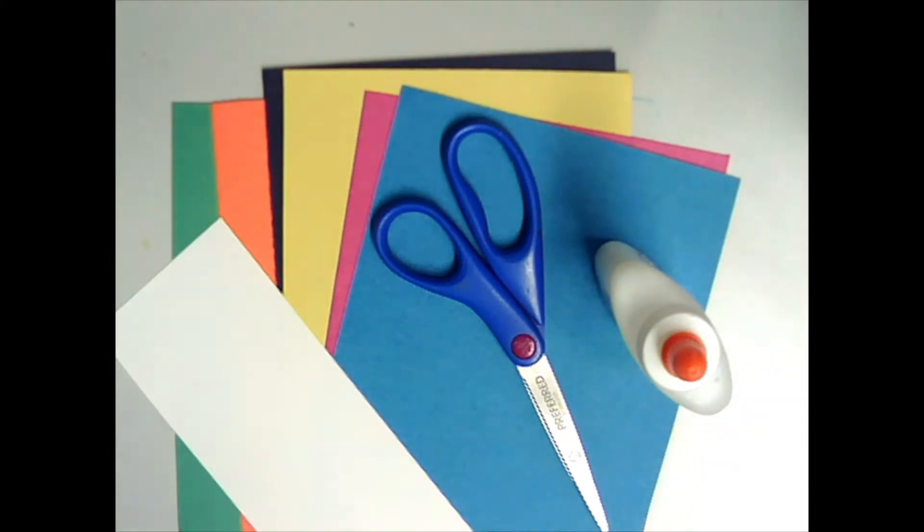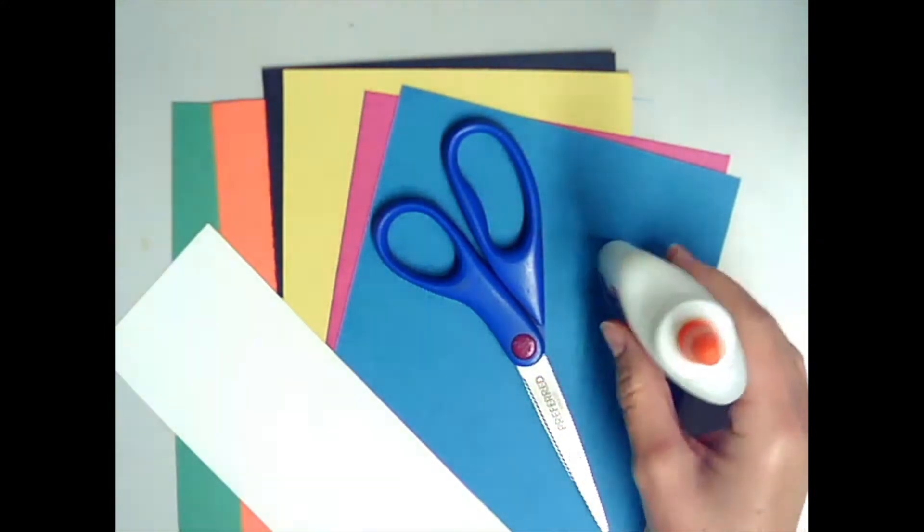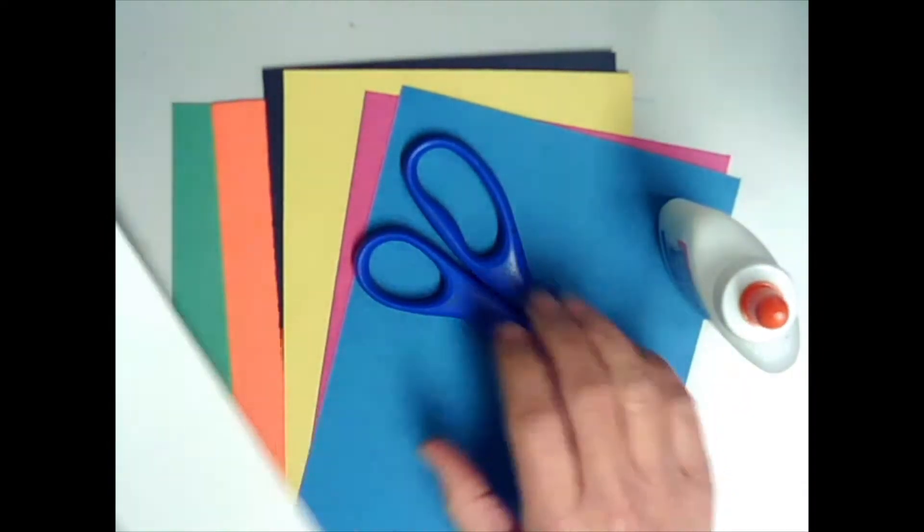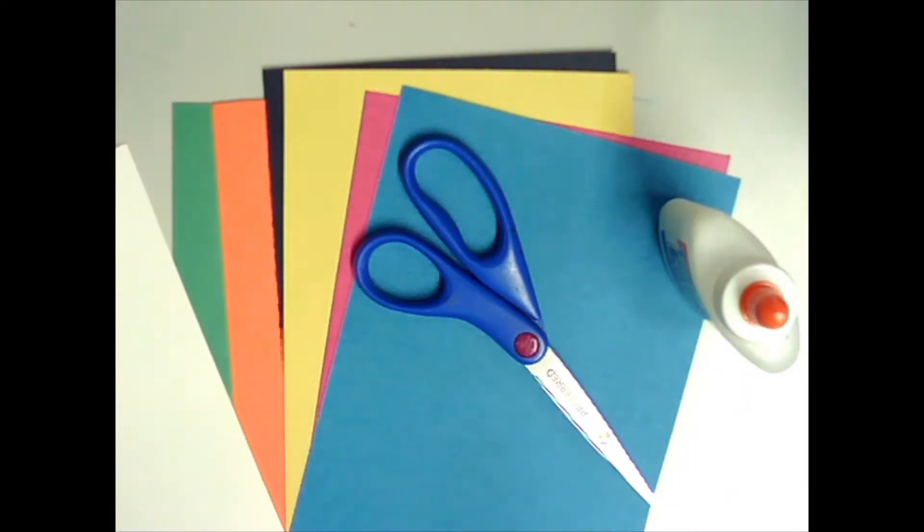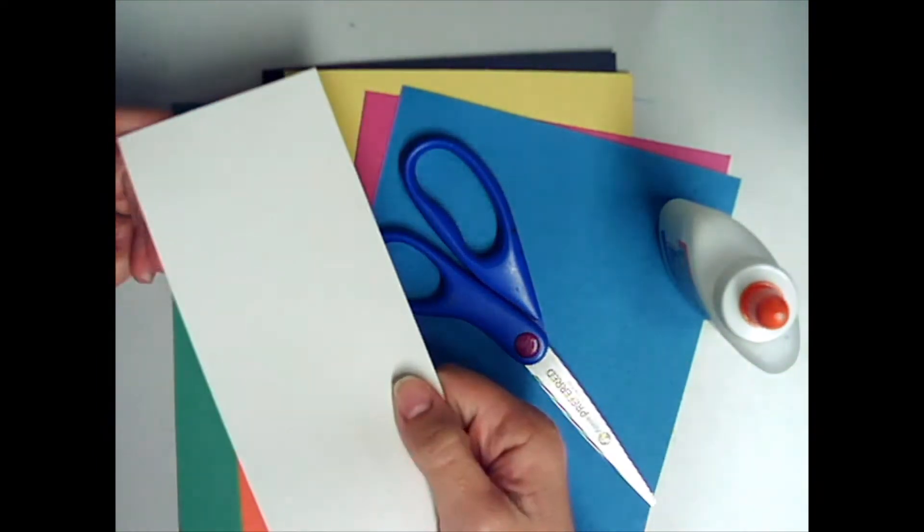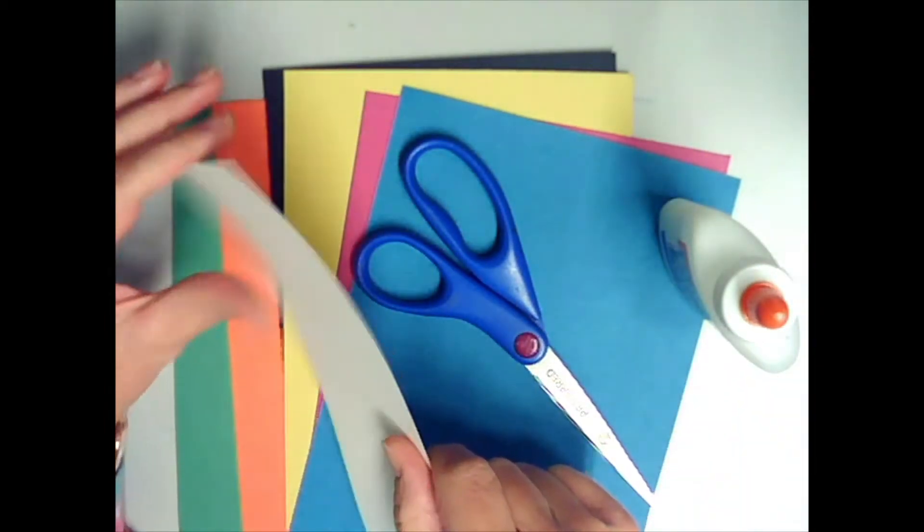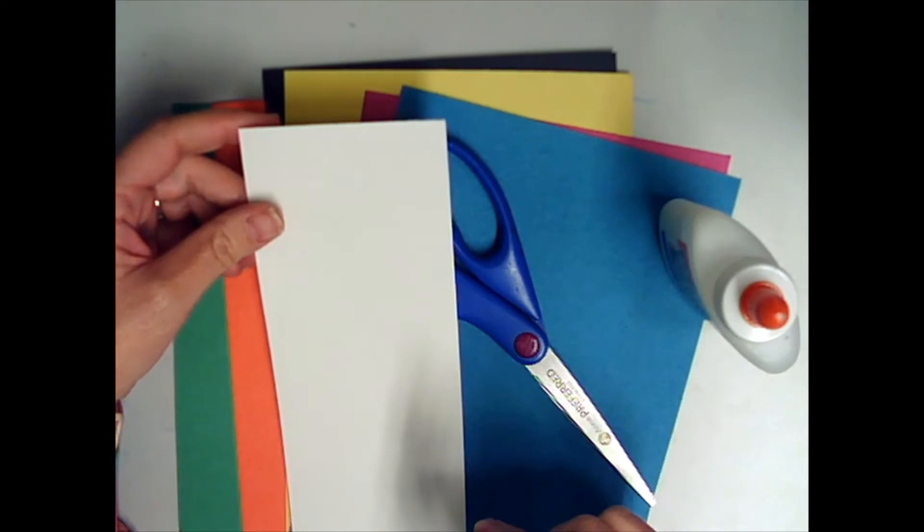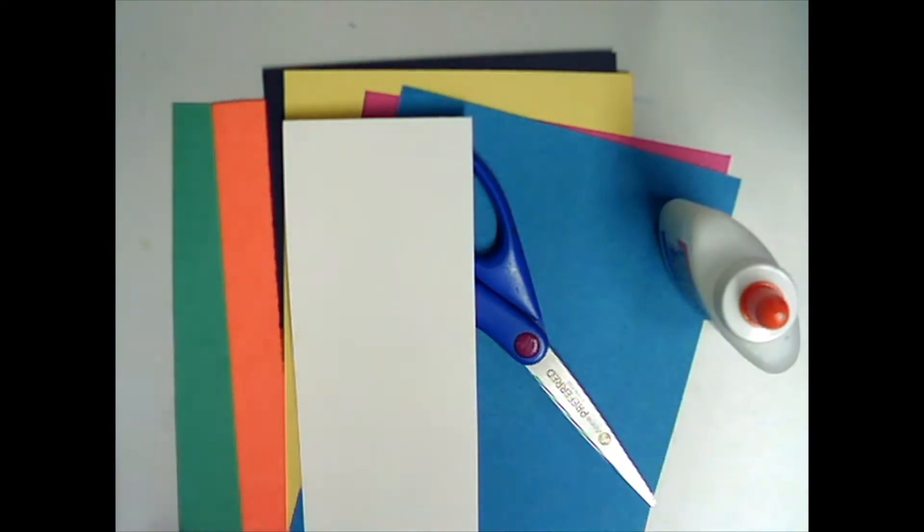Alright, for this Matisse painting with scissors, you are going to need glue, scissors, and the construction paper, the colorful construction paper from your art packet. I also grabbed a little scrap of white paper. I'm sure you can find a piece of white paper laying around. And I'm going to use these to make my painting with scissors.